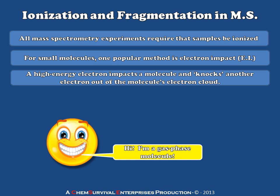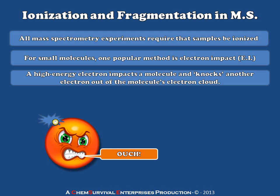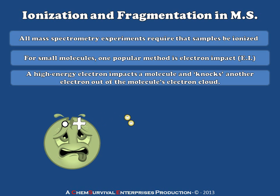For a cartoon representation, let's take a molecule here in the gas phase. That molecule has an electron cloud. If we shoot this molecule with a high-energy electron, it can collide with that cloud, causing the ejection of one electron. The result is that the molecule loses one of its original electrons, so we end up with a radical cation — an unpaired electron and a positive charge now associated with our gas phase ion.